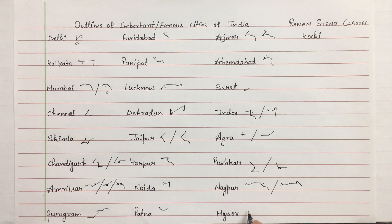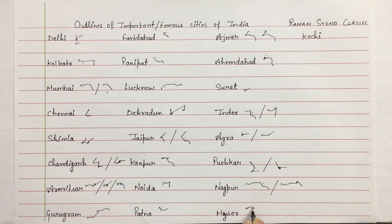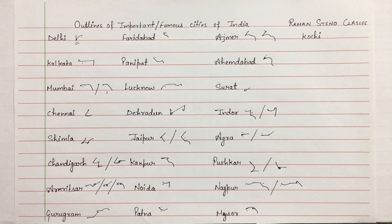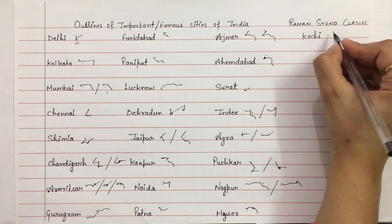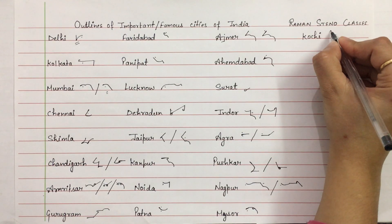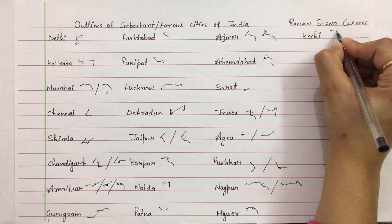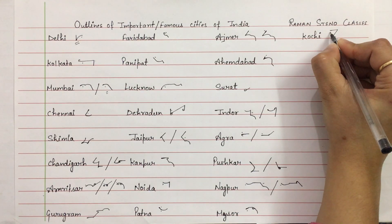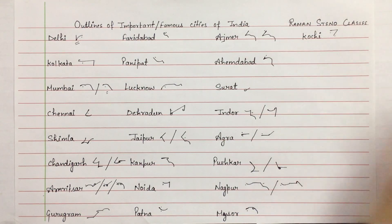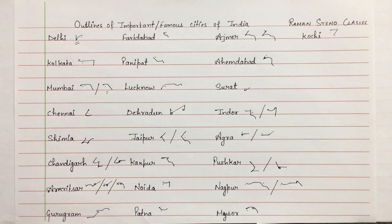Mysore — above the line. M, circle S and R, wobble place. Mysore. Then Kochi — above the line. K and Ch, wobble O and E. Kochi.